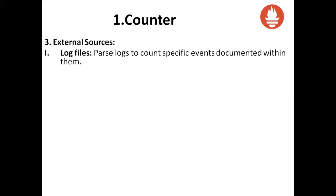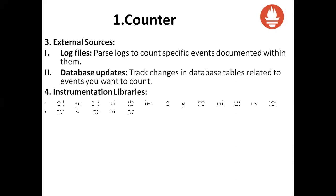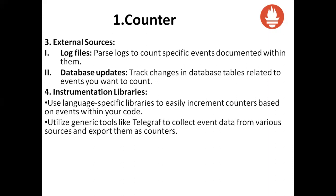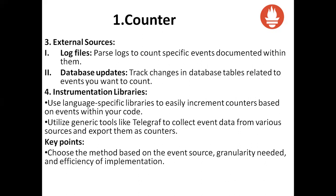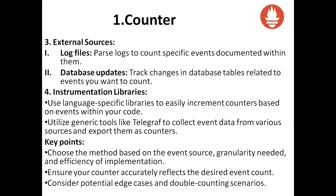External sources: parse log files to count specific events documented within them. Database updates track changes in database tables related to events you want to count. Instrumentation libraries — available on the Prometheus official page — use language-specific libraries to easily increment counters based on events. You can also use generic tools like Telegraf to collect event data from various sources and export them as counters. Key point: choose the method based on the event source, granularity, and efficiency of implementation. Ensure your counter accurately reflects the desired event count.